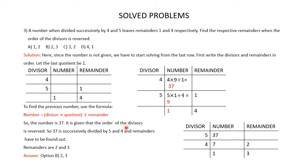It is given that the order of the divisors is reversed. Earlier the divisors were in the order 4 and 5; now reversed, it becomes 5 and 4. So 37 is successively divided by 5 and 4. When 37 is divided by 5, you get 7 as the quotient and 2 as the remainder. When 7 is divided by 4, you get 1 as the quotient and 3 as the remainder. So finally you get the remainders as 2 and 3. The correct answer is option B.